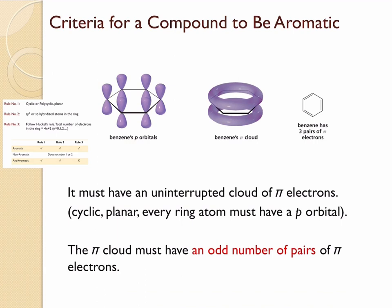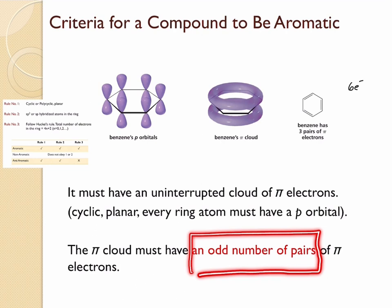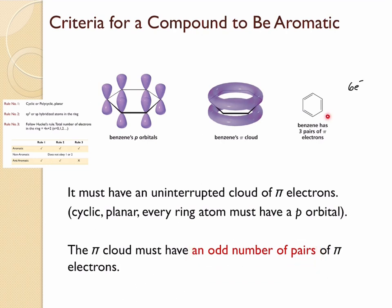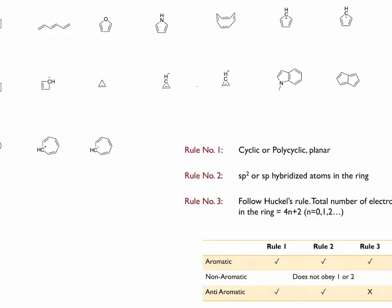Applying all three rules, we can clearly see that benzene is an aromatic compound. It has a cyclic structure, all atoms are sp2 hybridized, giving an uninterrupted pi electron cloud. The total number of electrons participating in delocalization is six, which is three pairs of electrons — an odd number of electron pairs — so benzene obeys Hückel's rule and is therefore aromatic.